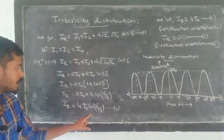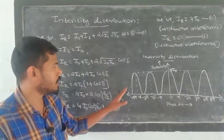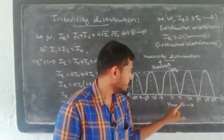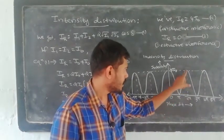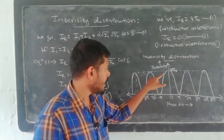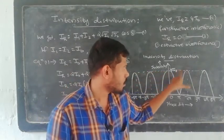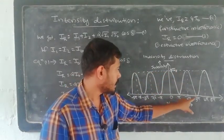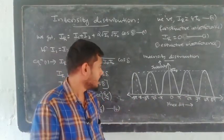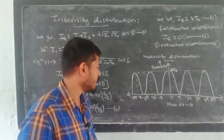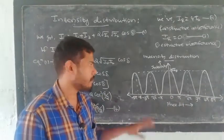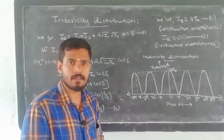Now I will show the intensity distribution. This is a cosine-square function. On the delta axis: at delta = 0, 2π, 4π, −2π, −4π (even multiples of π), intensity is maximum. At delta = π, 3π, 5π, −π, −3π, −5π (odd multiples of π), intensity is equal to zero.